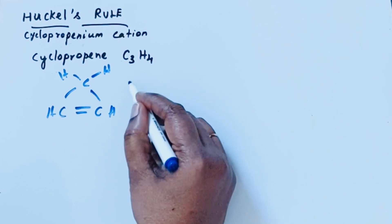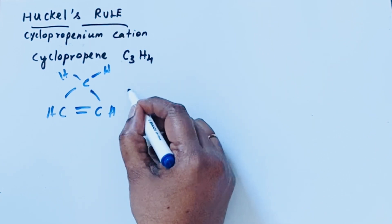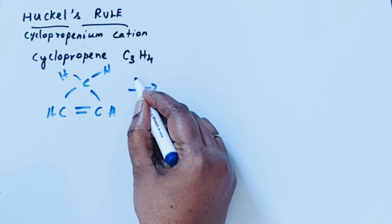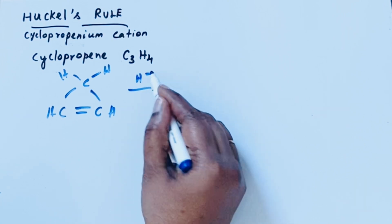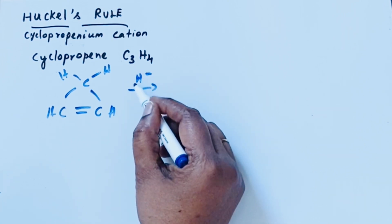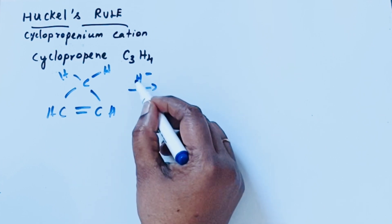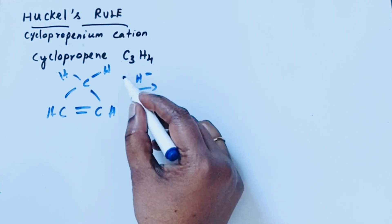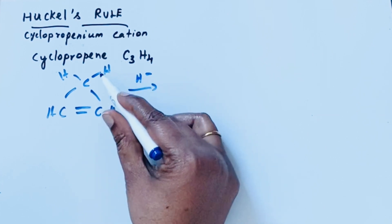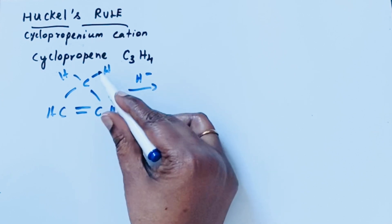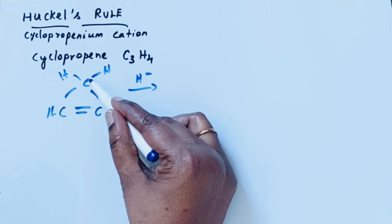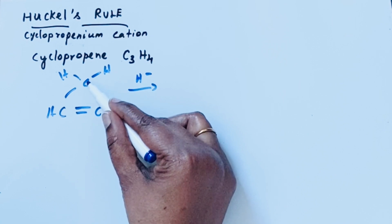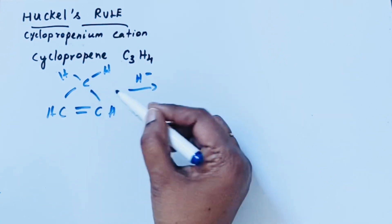This cyclopropenium cation is formed by losing the H minus ion. Whenever H minus ions are removed, it takes the electron away from the bond formation. Because of that, there is a shortage of electrons on this carbon and this carbon now possesses a positive charge.